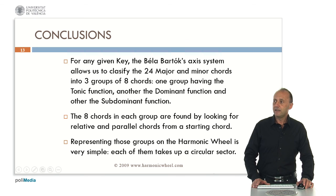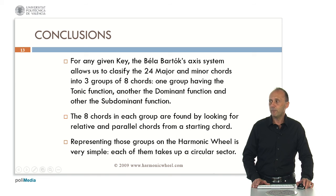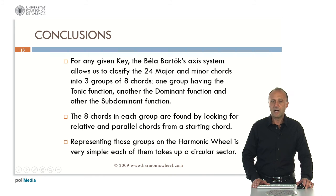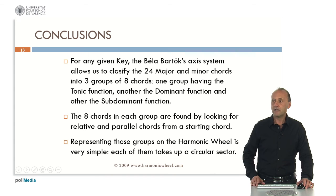Conclusions: for any given key, the Béla Bartók axis system allows us to classify the 24 major and minor chords into three groups of eight chords each — one group with the tonic harmonic function, another with the dominant harmonic function, and another with the subdominant harmonic function. The eight chords in each group are found by looking for relative and parallel chords from a starting chord. The representation of these groups on the harmonic wheel is really simple — each of them takes up a circular sector. You can find all the information on the webpage www.harmonicwheel.com. Thank you very much for your attention.